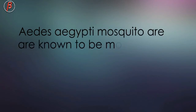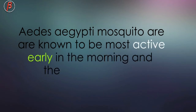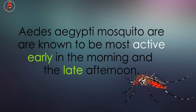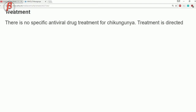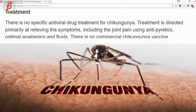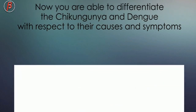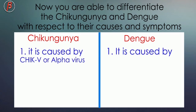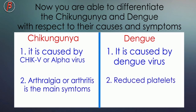The mosquitoes that spread dengue are known to be most active early in the morning and in the late afternoon. As already mentioned, according to WHO, there is no specific antiviral drug treatment for dengue. After studying both diseases, you are now able to differentiate chikungunya and dengue with respect to their causes and symptoms.